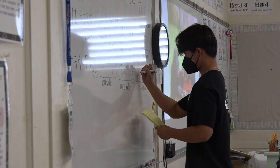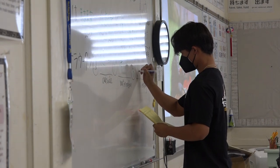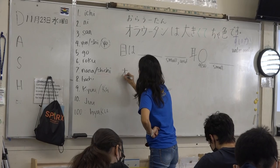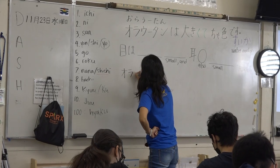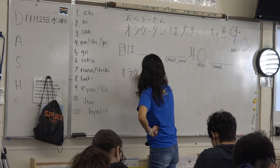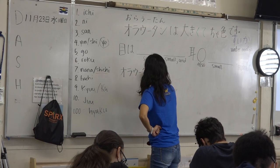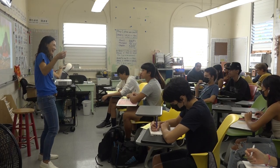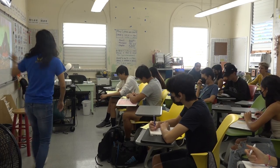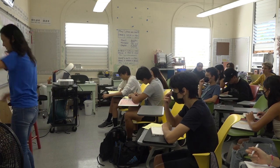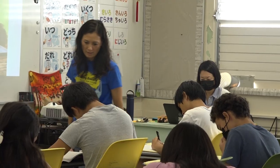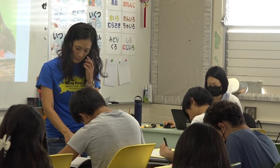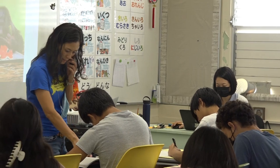In Japanese 1, students will practice how to communicate and present on very familiar topics using a variety of words and phrases. Hiragana and katakana letters will be introduced and practiced, and students will read, write, and memorize words and phrases in hiragana and katakana.